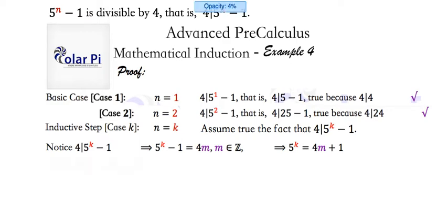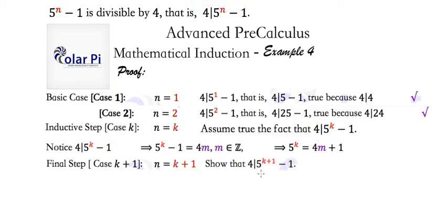Okay, cool. So, on to that final induction step. And that final step is where we let n equal k plus 1. Here, that means that we need to show, as we already said, that 4 divides 5 to the k plus 1 minus 1. All right. How do we do this? Right? Okay.